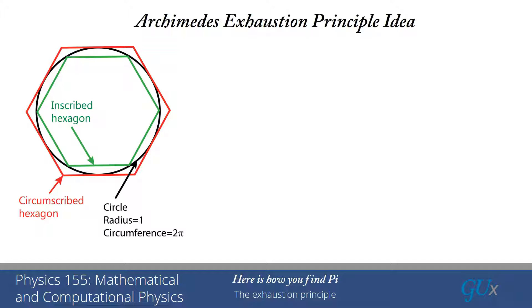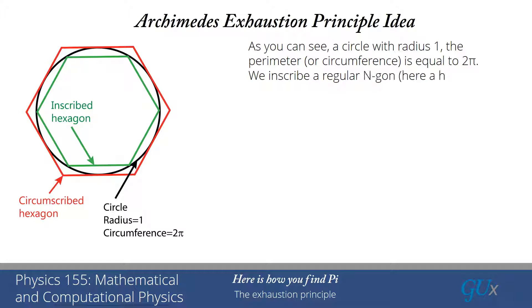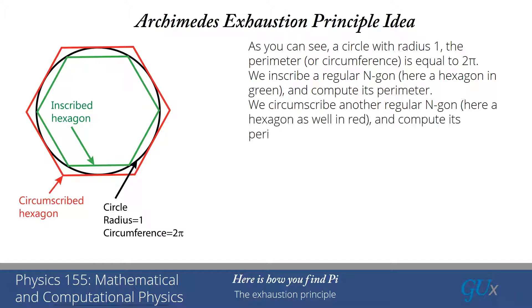So here is a picture of the way in which this exhaustion principle idea works. We have a unit radius circle in black. The perimeter or circumference of that is equal to 2 pi. We have an inscribed hexagon in green. That is our n-gon. And we need to compute the perimeter of that n-gon. We have a circumscribed hexagon in red. That is also an n-gon. And we need to also compute its perimeter. And the value of 2 pi should lie in between those two perimeter values.